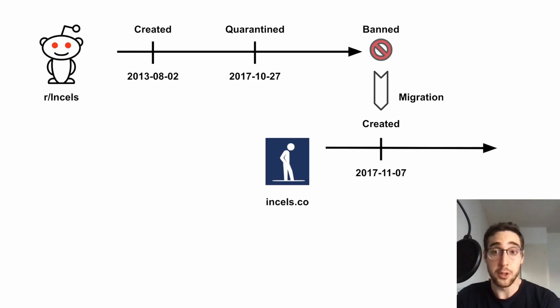A second community with a similar story is r/Incels. It was created in 2013, but went on to grow in popularity only years later, around 2016. In 2017, the subreddit was quarantined, and shortly after, it was banned. Users in the community organized themselves around Discord chats and newly created subreddits, and orchestrated a migration to incels.co, a standalone, message board-style website.